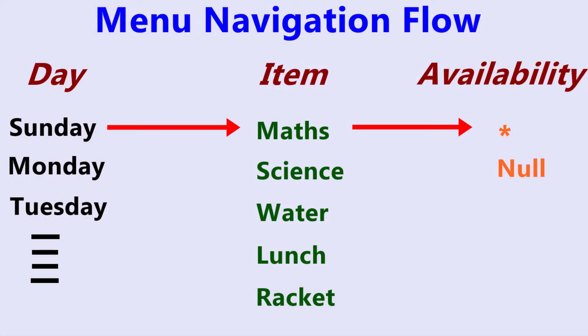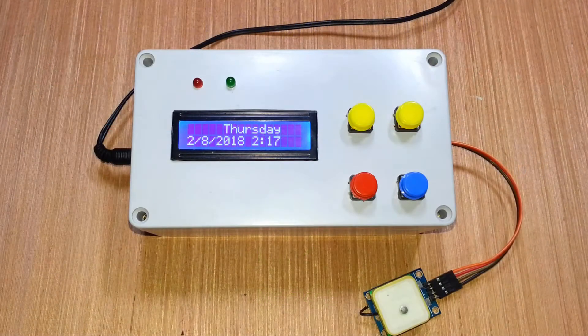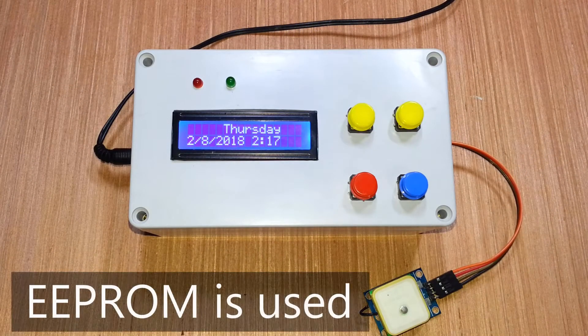This is the menu navigation flow of the system. When we first enter the menu by clicking the red button, it will show all seven days in a wheel. The user can navigate left and right and select a day by clicking the red button again. After that, they will see the list of school items and can navigate left and right to mark items related to that day. A star icon will appear in front of selected items.